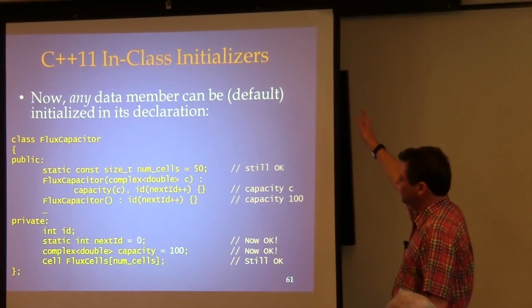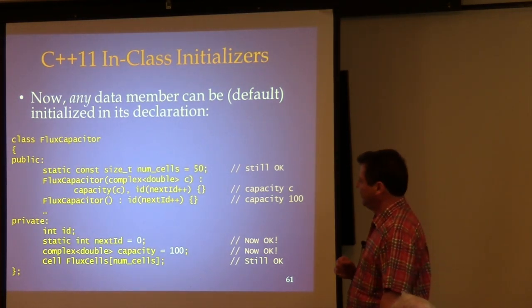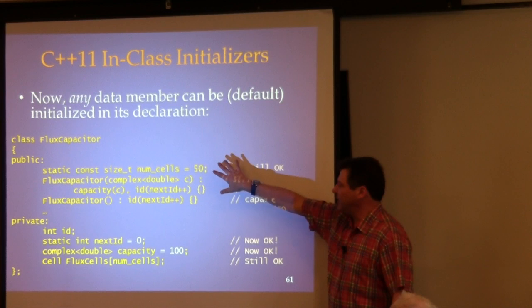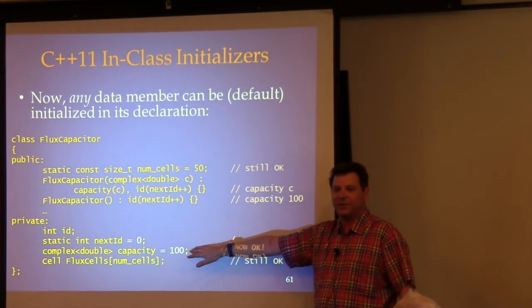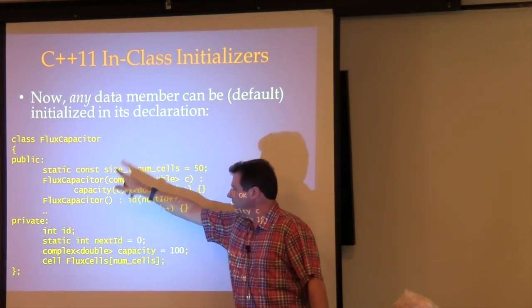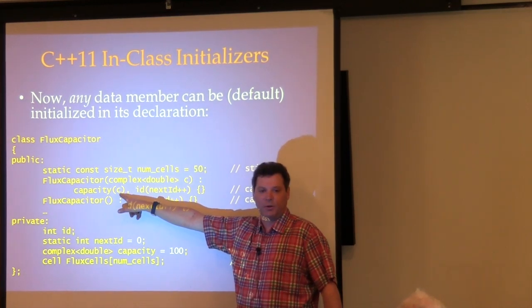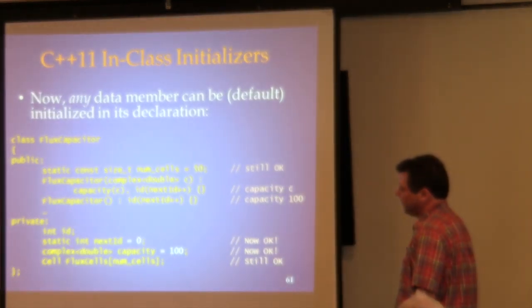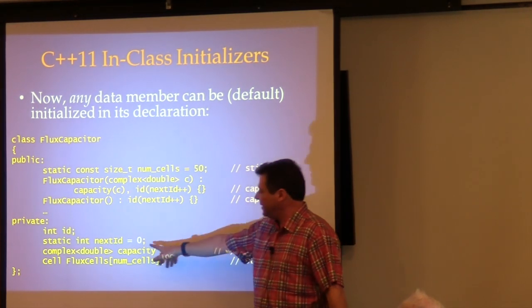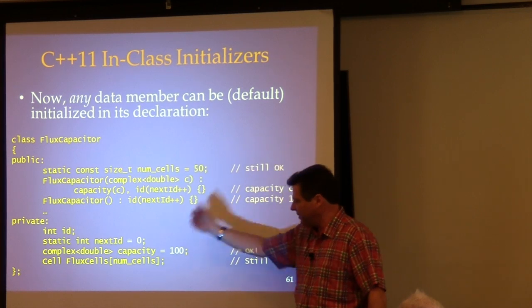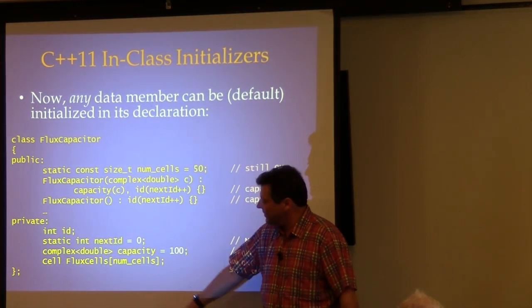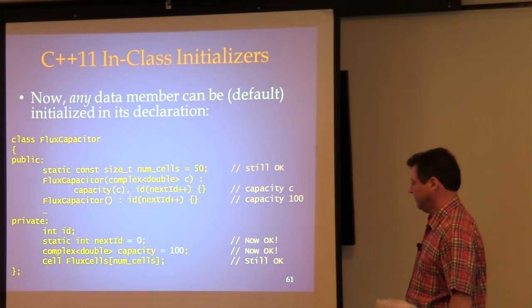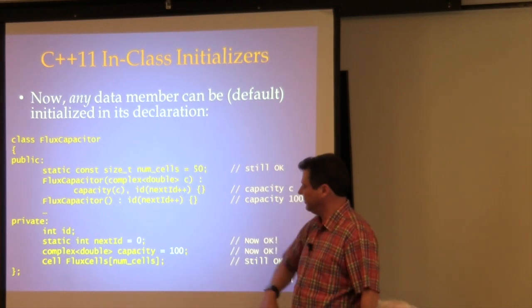Now it gets better. In new C++, any data member can be defined and initialized in its declaration, and the compiler does what you'd want: if the constructor fails to mention it, what you wrote in the declaration takes effect. If in the constructor you actually set something, it ignores the default and does what you told it. It's not going to double-initialize.